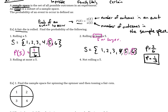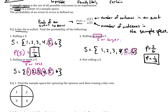Rolling at most five — 'at most' means five is the most, so this is five or less than. Drawing the sample space one more time: at most five includes five, four, three, two, and one. So five of the numbers are circled out of a total six. That probability is five out of six.